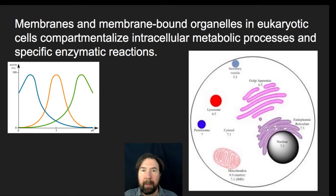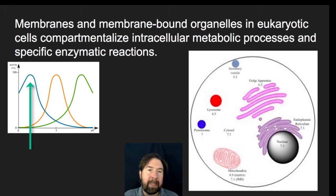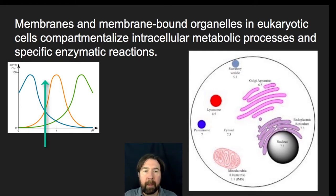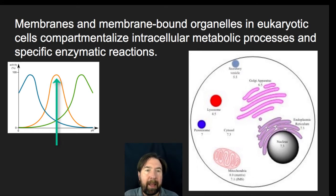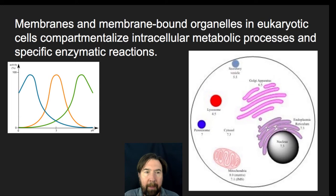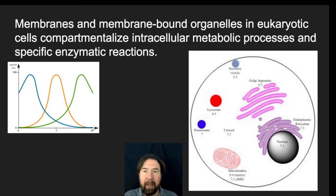Temperature is another factor, and salinity is another component. Looking at a graph, the blue line might represent enzyme activity for an enzyme that works really well in an acidic environment, the yellow-orange line for a neutral environment, and the green for a basic environment. Other environmental factors such as salinity also influence the shape and activity of a specific set of enzymes.